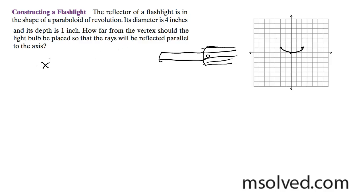So we have the following equation: x squared is equal to 4ay. And at one of the ends here, it's (2, 1).